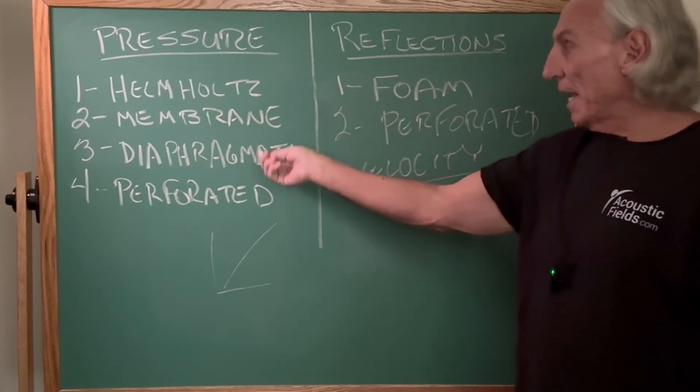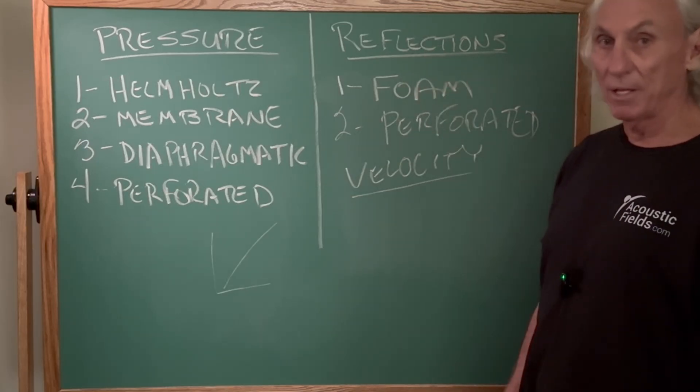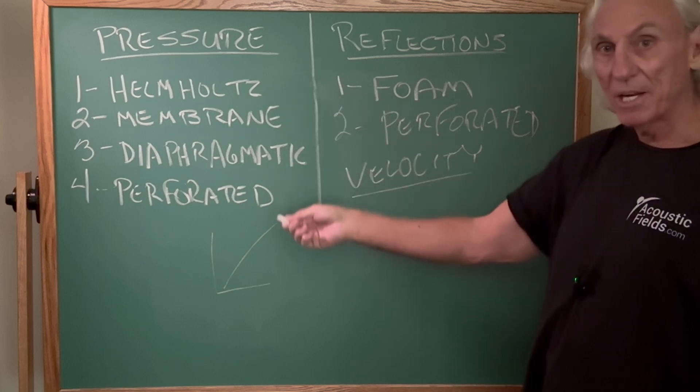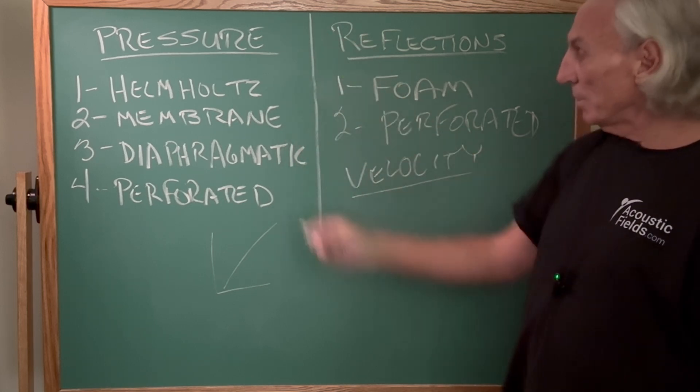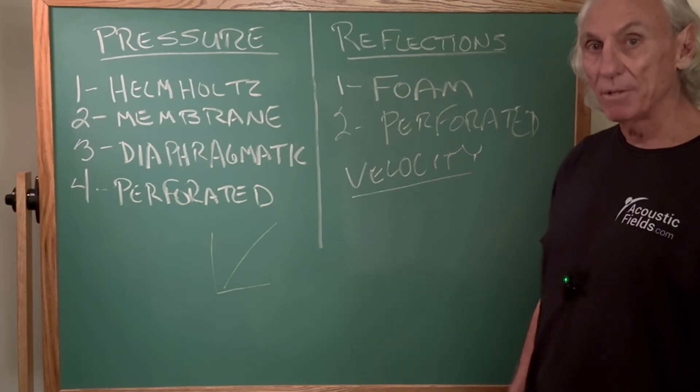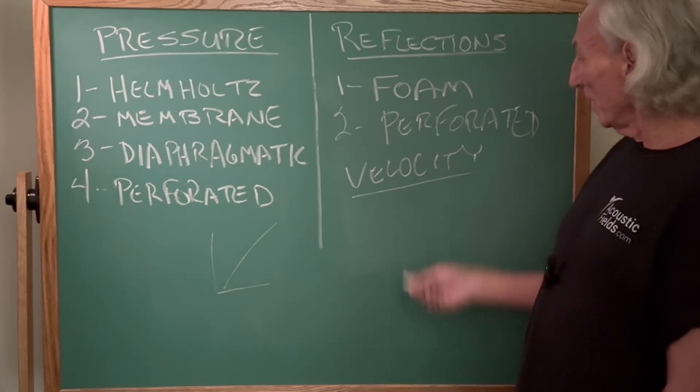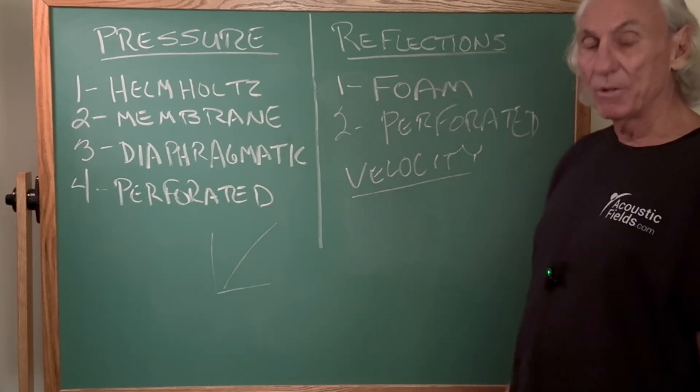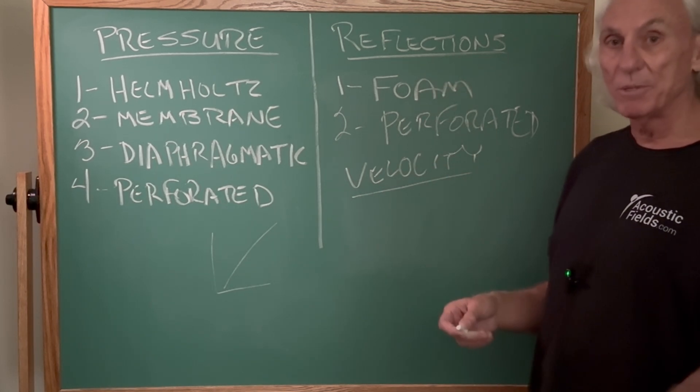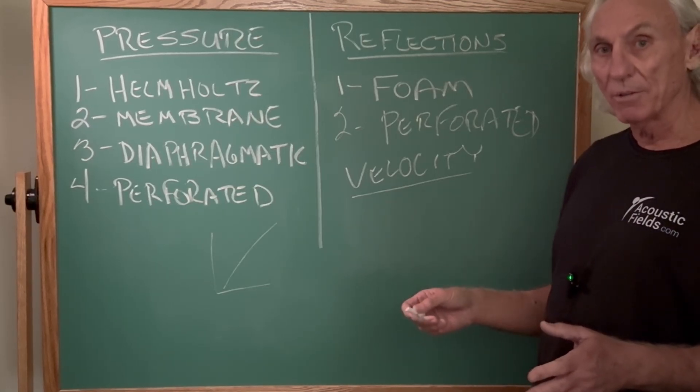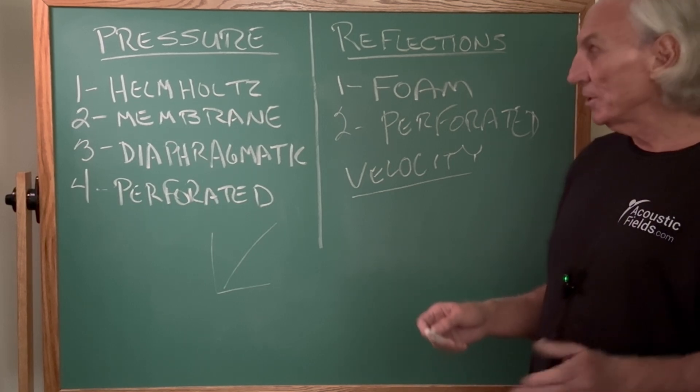So pressure, reflection, and these are our treatment types. You can't use foam to deal with pressure, you can't use diaphragmatic to deal with reflections. So you have to stay in your lane, you have to stay in your category, you have to work with the treatment that is assigned to the problem that you have in the room. Okay, so with reflections we want the air to move over the surface. That's why open cell foam is so nice - it's economical to build and manufacture, and you can control the rate and level of absorption.